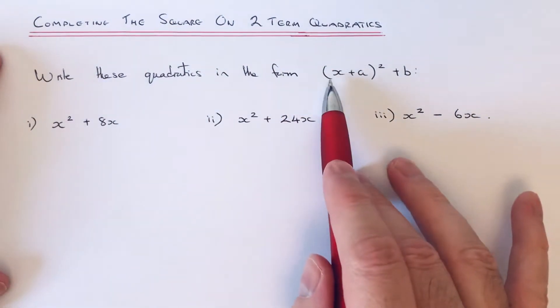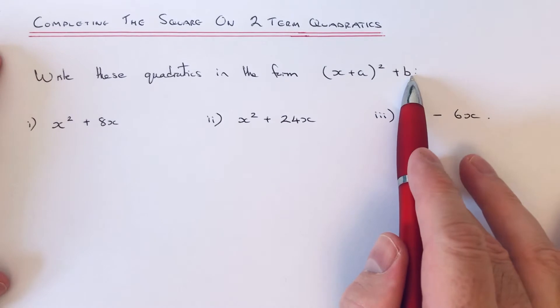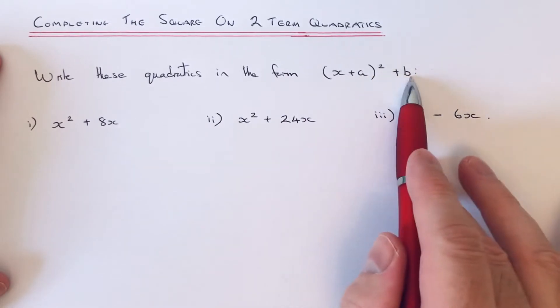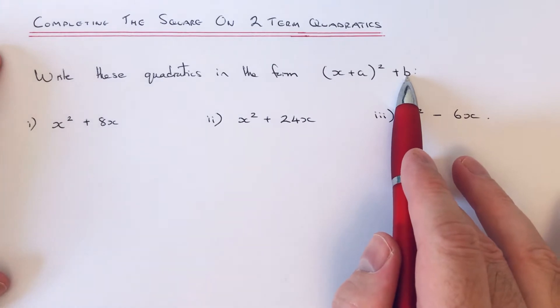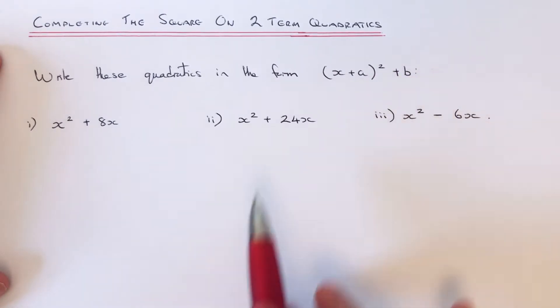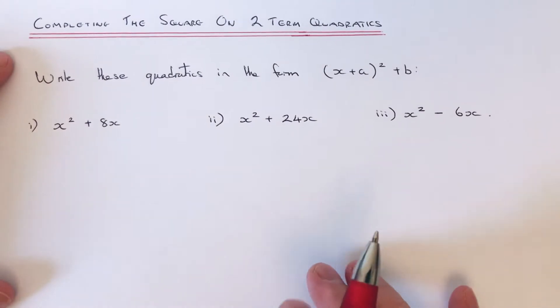Okay, so what we're going to do is write the quadratic in the form (x+a)² + b. So we're trying to work out the values of a and b. They can also use other letters like p and q in exam questions, but it basically means you've just got to complete the square. So let me show you how to do that.